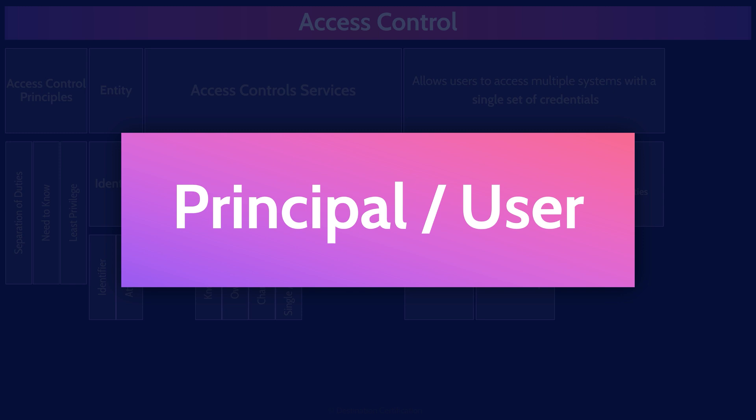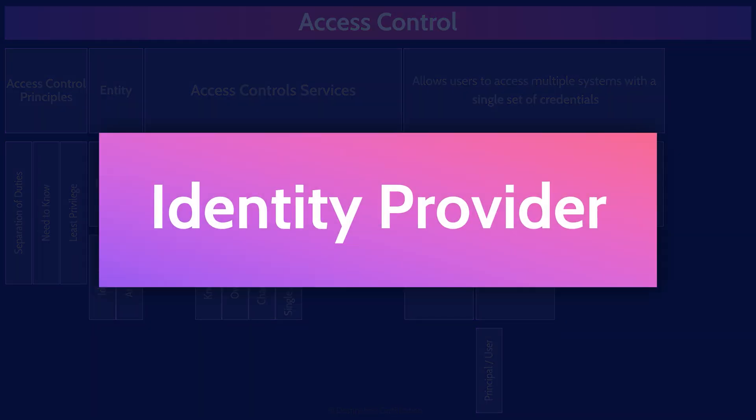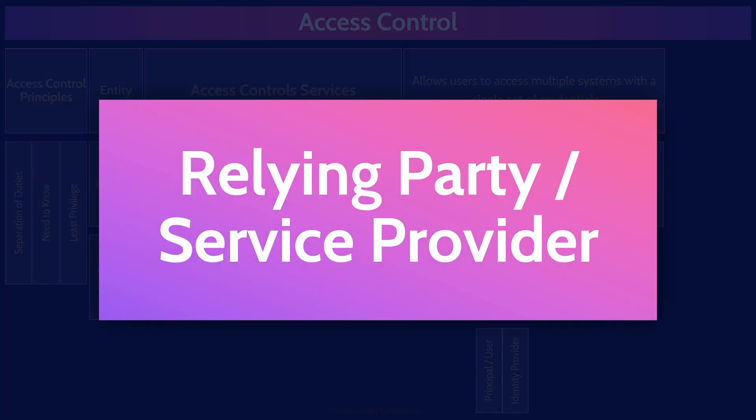The first entity is the user, sometimes referred to as the principal. The identity provider authenticates the user — verifies their identity via knowledge, ownership, or characteristics — and in many organizations this will be something like Active Directory. The service provider, sometimes called the relying party, is what the user wants to access — often an application owned by another vendor, like a SaaS product. Think about SaaS applications we use through work: ServiceNow, booking travel, entering expenses — federated identity management allows access to all these without logging into each one individually.